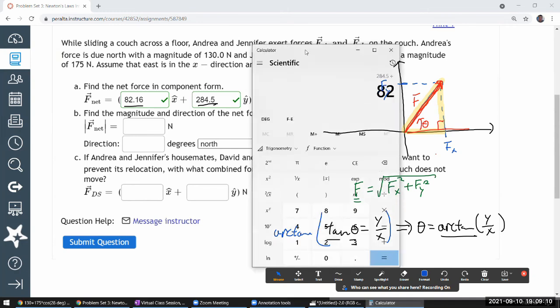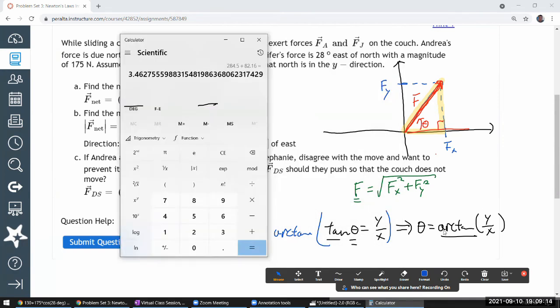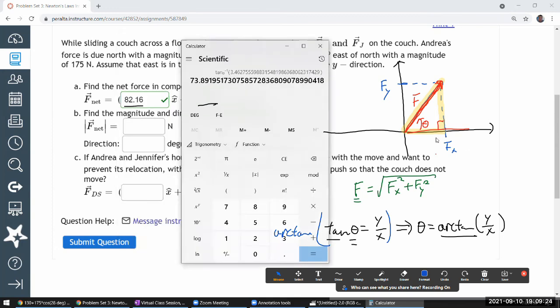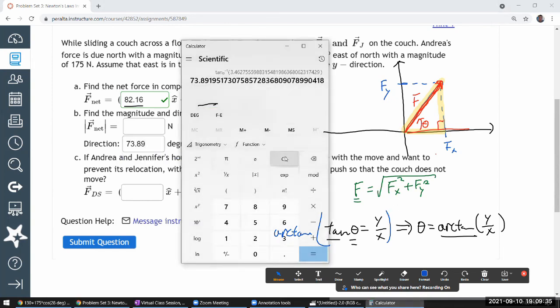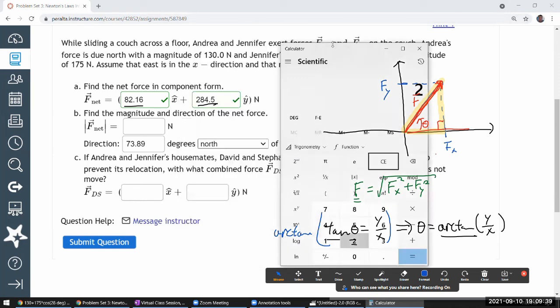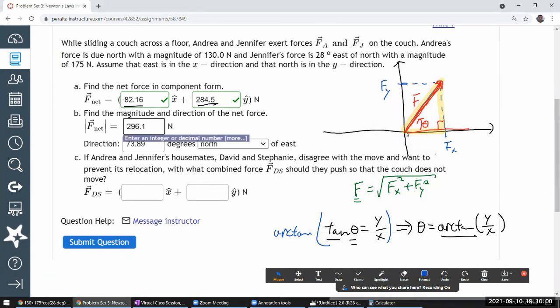So my components, 284.5 divided by 82.16, that's the ratio that's going to get put through arc tangent. So trig, second, inverse tangent. So 73 point, I think that's already in degrees. So the angle here should be 73.89 degrees. 73.89 degrees north of east. Oh, and I never calculated this. So let me do that. 284.5 squared plus 82.16 squared. That's the sum. Let me take the square root, then I get 296.1. That seems reasonable to me. 296.1. That's the length of this hypotenuse.